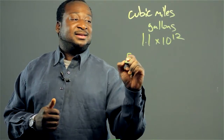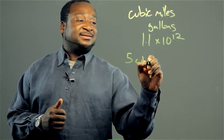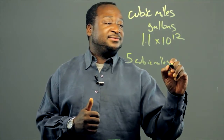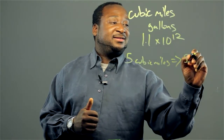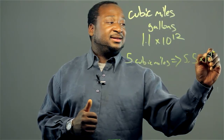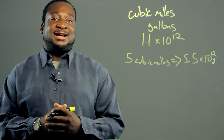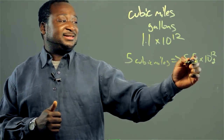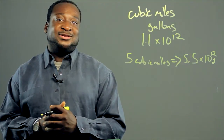So 5 cubic miles — that's equivalent to 5.5 times 10 to the 12 gallons. That's a lot of zeros. You get this number, you write it out, and you can see how large that number is.